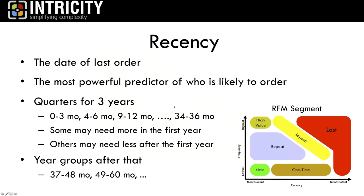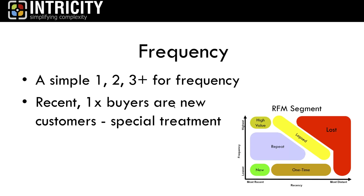In the RFM example, we look at the date of the last order — a very important predictor in many businesses of how likely they are to reorder. We break data down into quarters, looking at three years and examining what happened in the first three months, second three months, and so on. Depending on how long customers stay with us, in some cases we look at a one- or two-year CLV calculation; in others, a much larger time horizon. For frequency, we simply ask: did they buy once, twice, or three or more times?